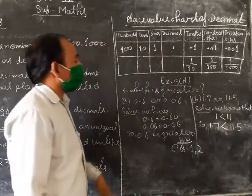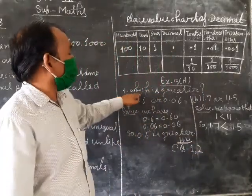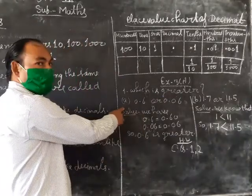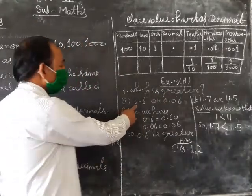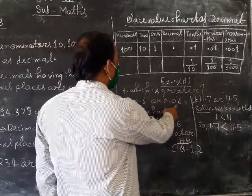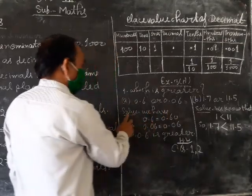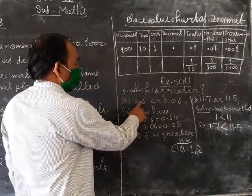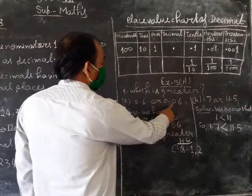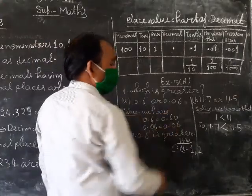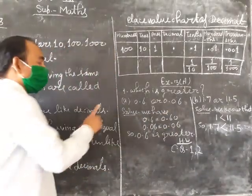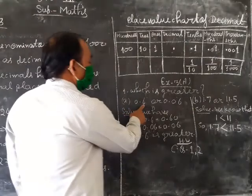Now exercise three — which is greater? Part number: is 0.6 or 0.21 greater? So 0.21 has two decimal places, and 0.6 has one decimal place.